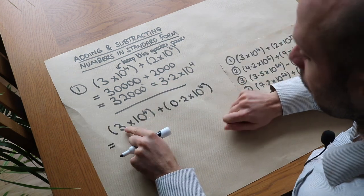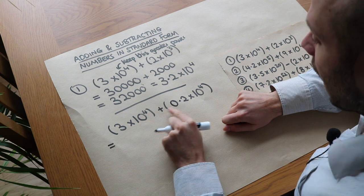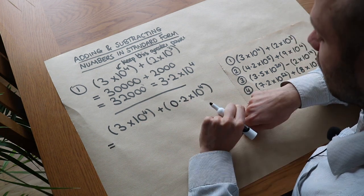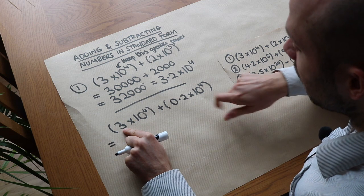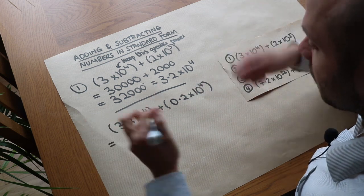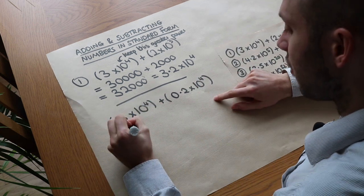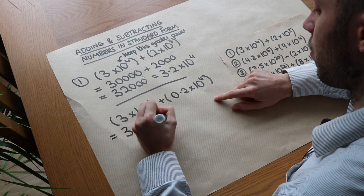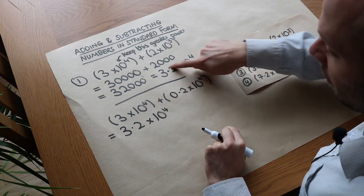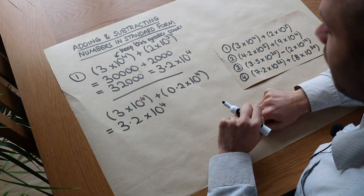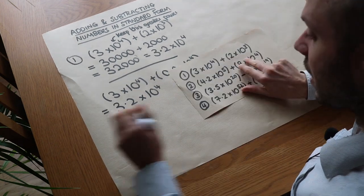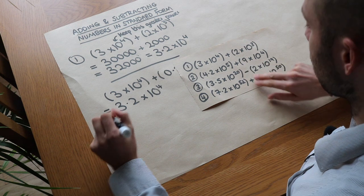Now because this is the same power, we've got 3 lots of 10 to the 4 and we're adding 0.2 lots of 10 to the 4. So we can just do 3 plus 0.2 lots of 10 to the 4. So that would just be 3.2 times 10 to the 4. And we've immediately got the correct answer without having to convert these into normal numbers. So let's do the second one using that cleverer method.